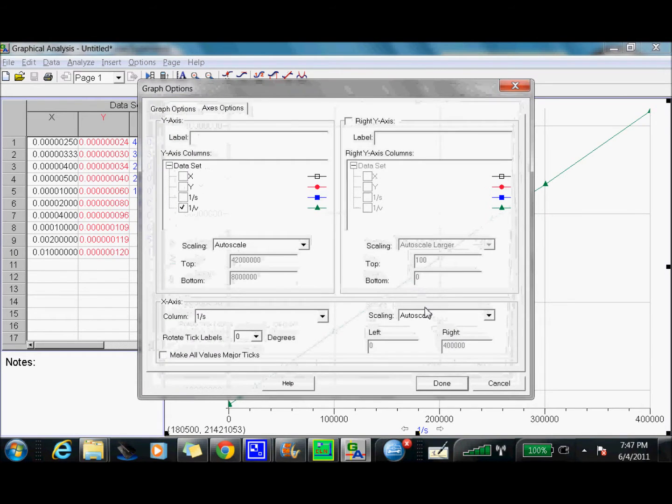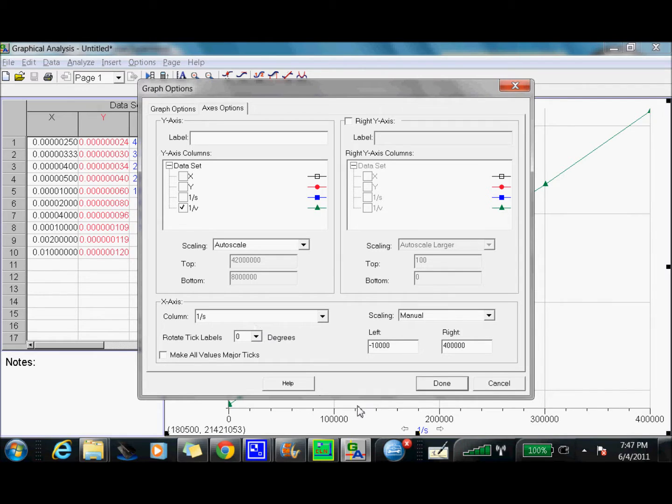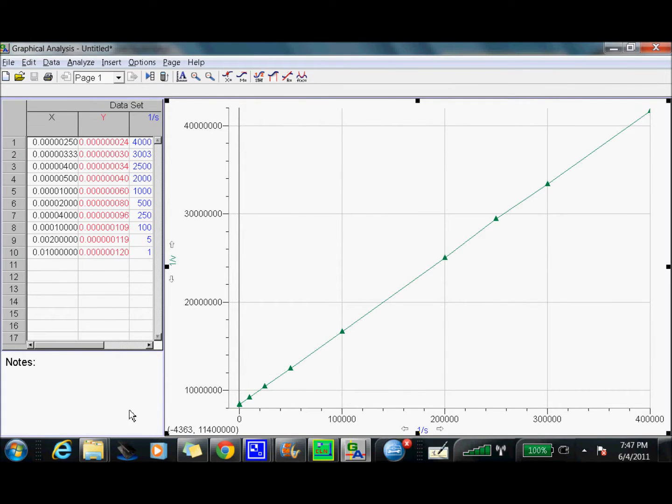Okay. There's that. But now I want to change it so I can see where it's going to intercept the X axis. Okay. Good.